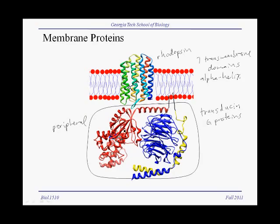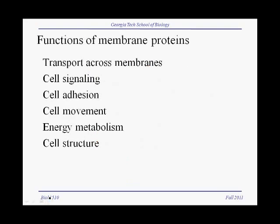Rhodopsin is a light receptor and it is coupled with a special G-protein called transducin. The G-protein has three different polypeptide chains that assemble together to make this quaternary structure. And even though this is a peripheral membrane protein, so none of this G-protein is actually embedded within the lipid bilayer, it hangs out in the periphery of the membrane phospholipids through tethers that link it to the membrane phospholipids.